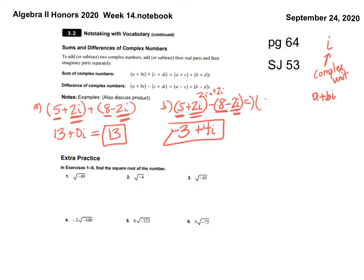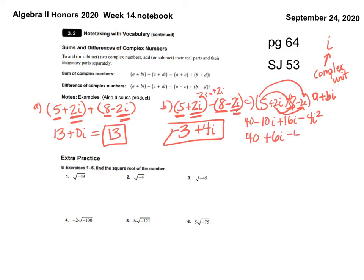And then let's multiply: (5 + 2i) times (8 − 2i). You should distribute. 5 times 8 is 40. 5 times negative 2i is negative 10i. 2i times 8 is positive 16i. 2i times negative 2i is negative 4i². Combine like terms: 40, and negative 10i plus 16i is positive 6i. Negative 4.